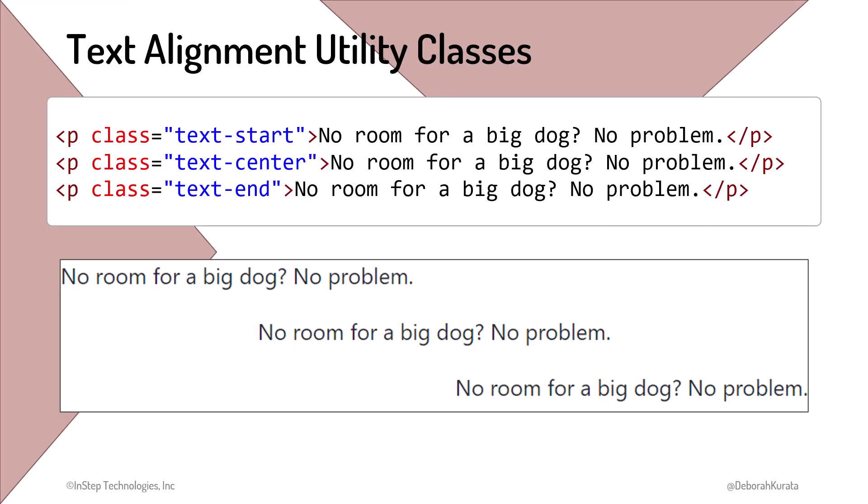These utility classes align text. In each of these cases, we set the paragraph element's class attribute to the name of the utility class. TextStart aligns the text to the left. TextCenter centers the text. And TextEnd aligns the text to the right.